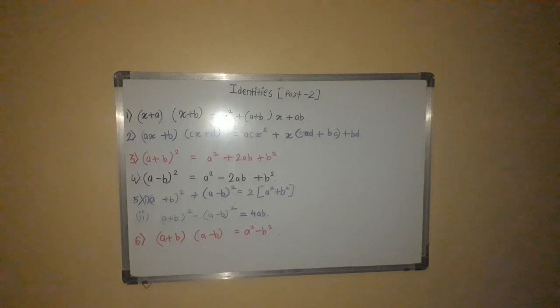Fifth identity number 1 is A plus B whole square plus A minus B whole square. Second A plus B whole square minus A minus B whole square.